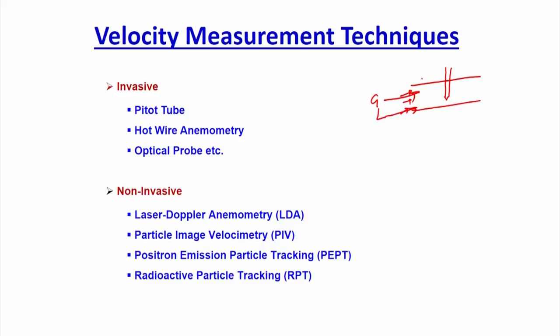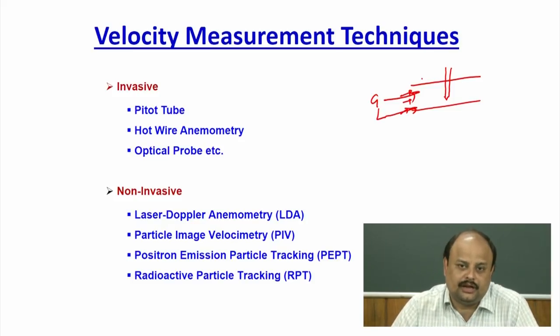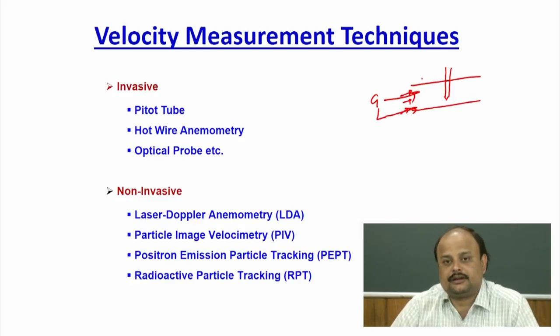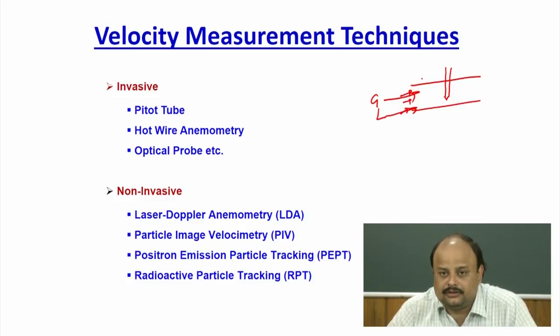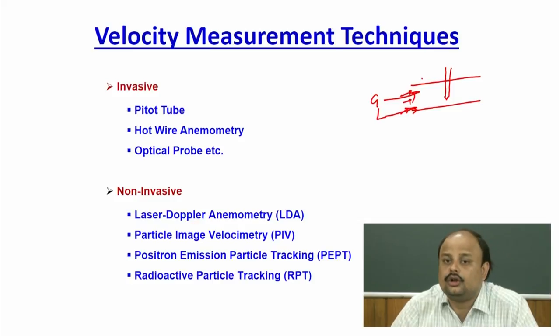The intrusive technique is generally very low cost and cheap, and sometimes gives direct measurement. But the major problem is that because you are intruding something inside, you may change the flow physics at the point of measurement itself — the flow dynamics may change at the measurement point. Despite this major limitation, intrusive techniques are widely used in industry and research because they are low cost, relatively simple, and give mostly direct measurements.